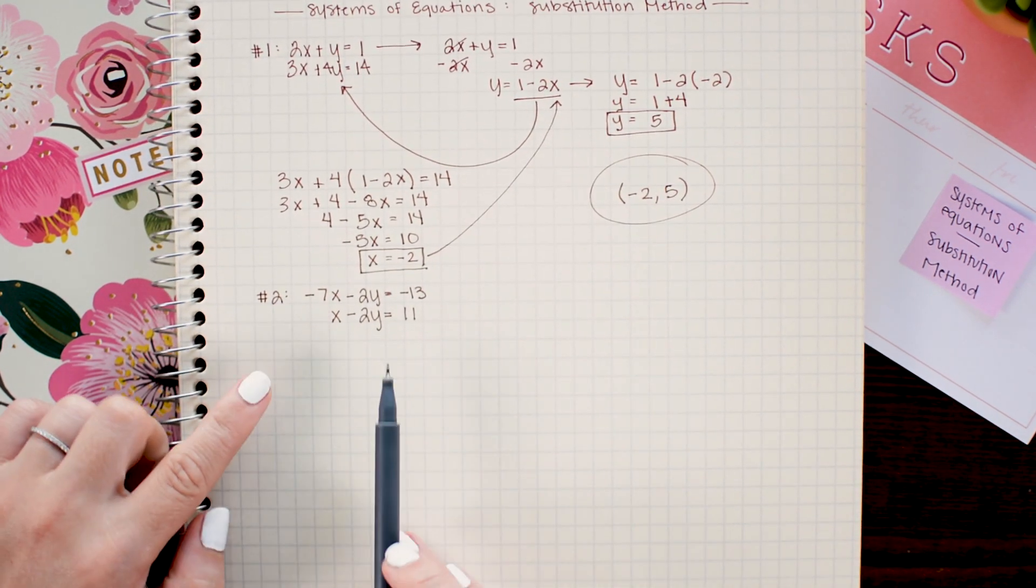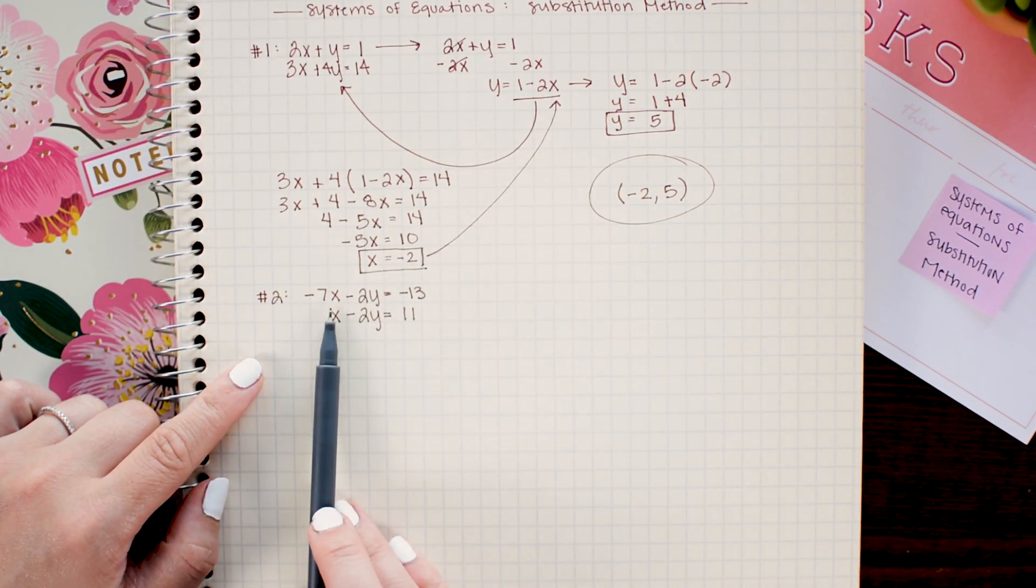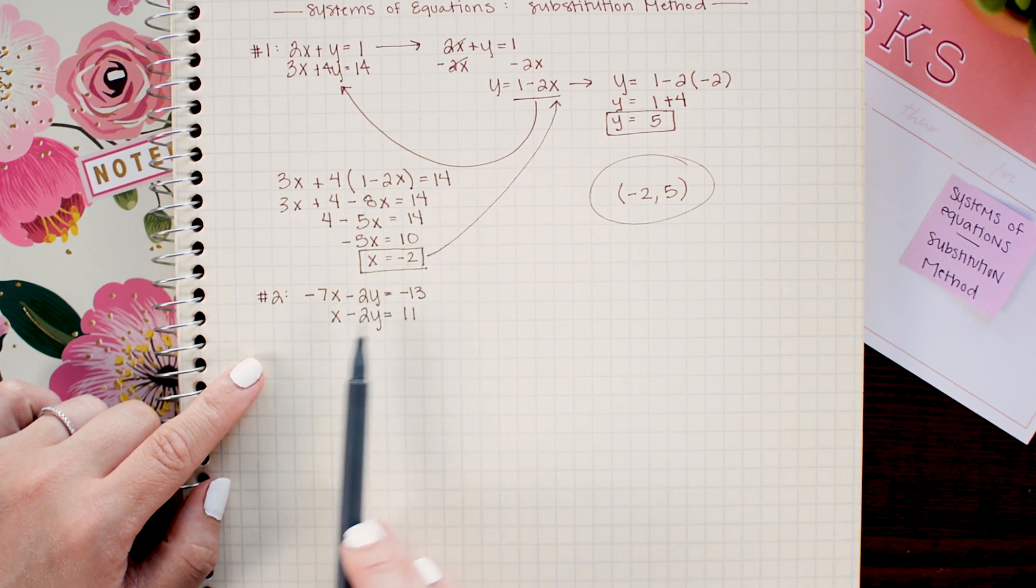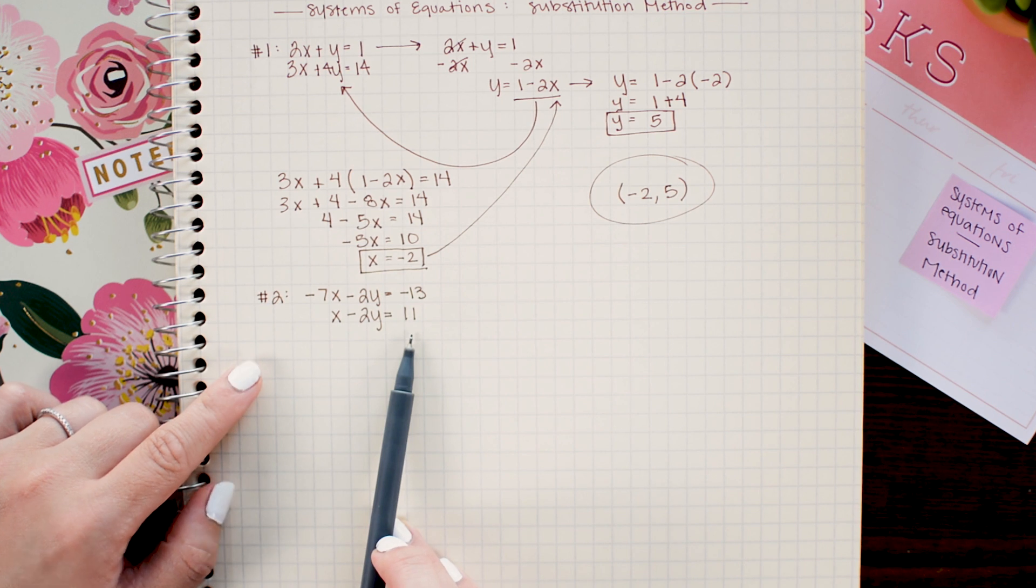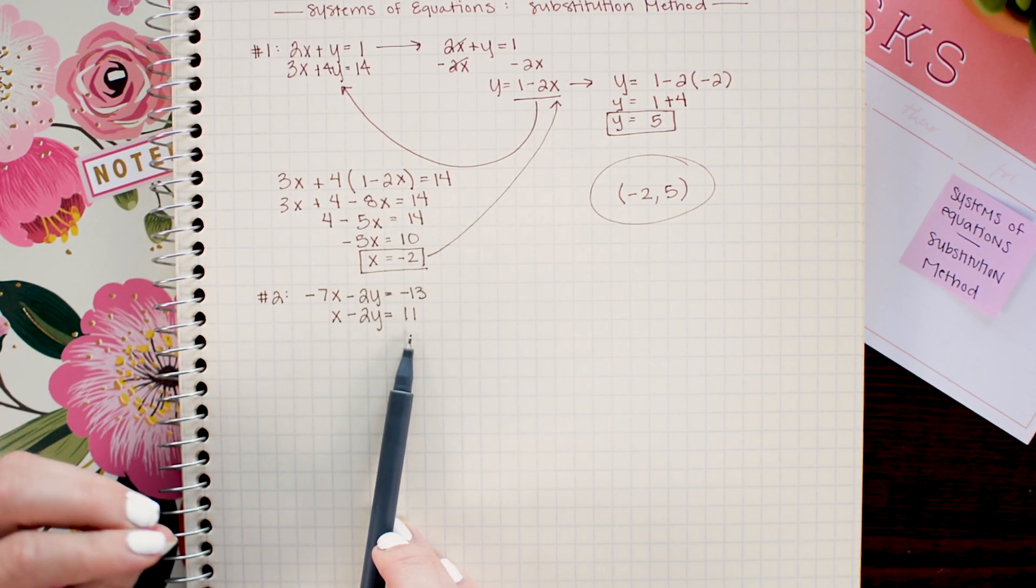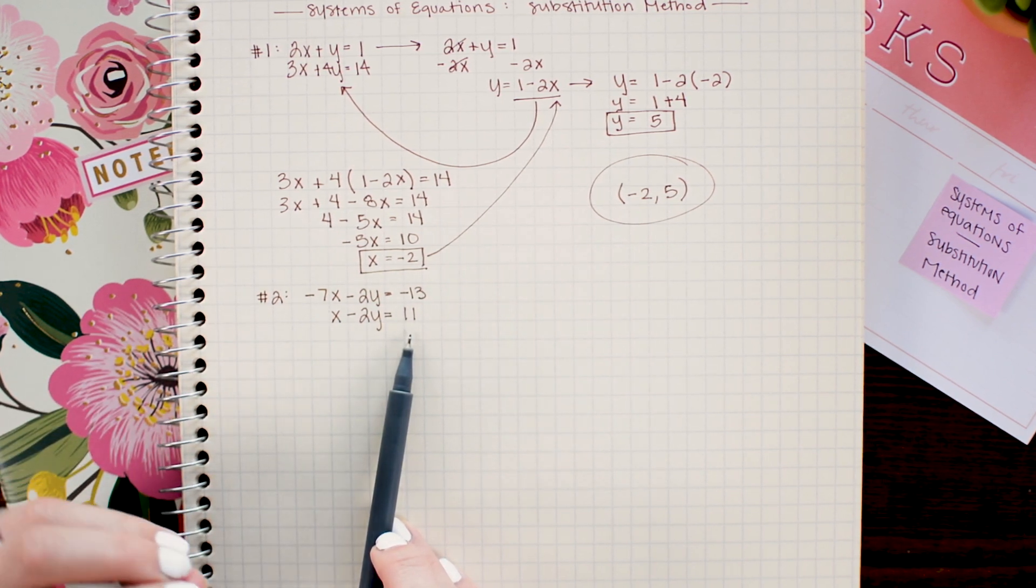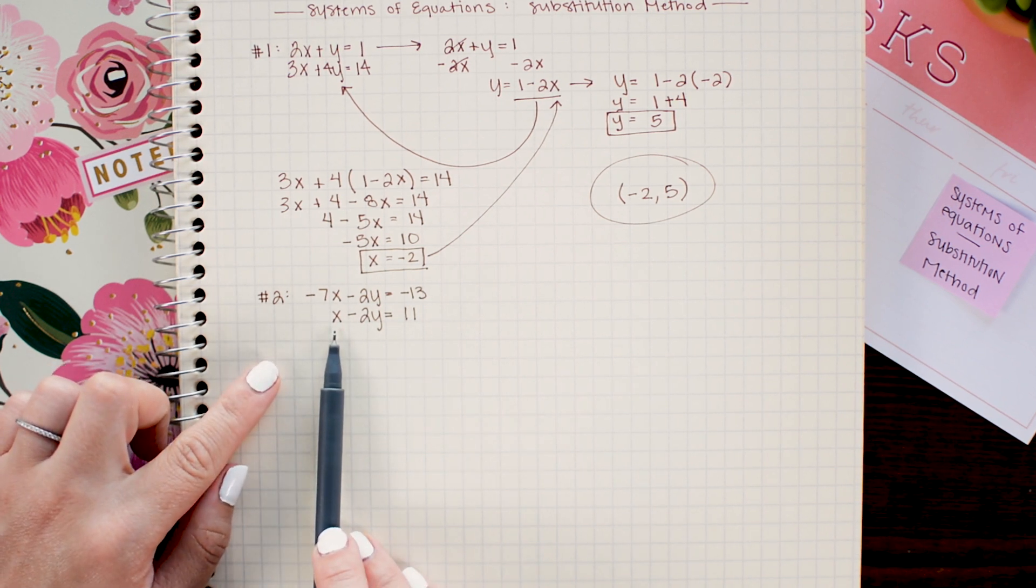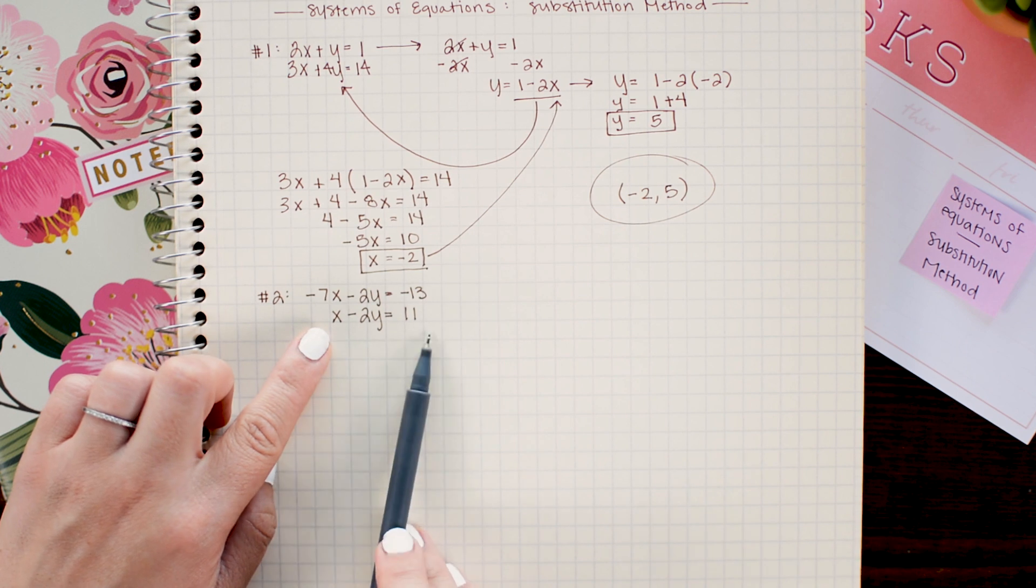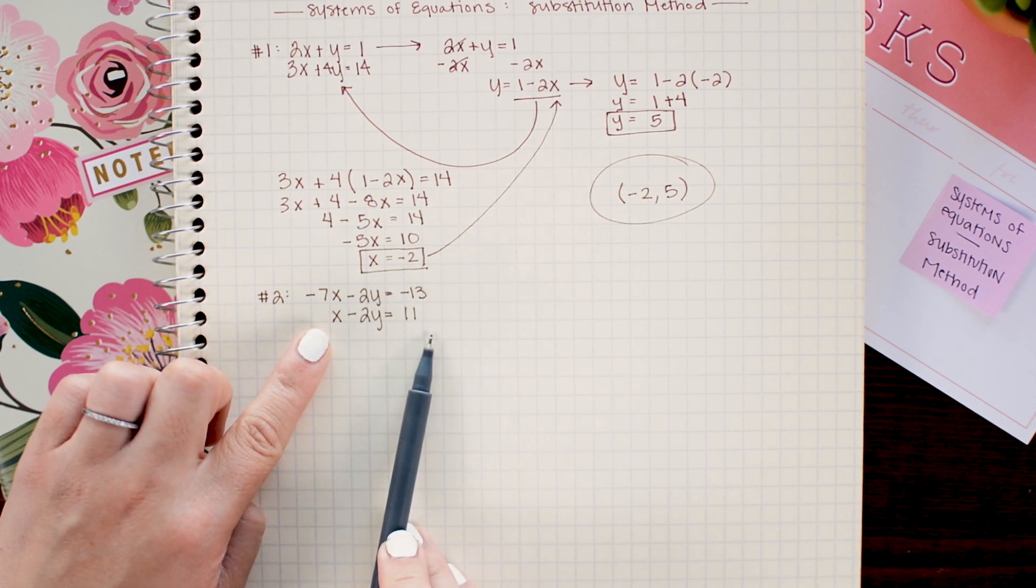In this second problem I have negative 7x minus 2y equals negative 13 and x minus 2y equals 11. So if I'm going to use the substitution method the easiest variable to isolate in this problem will be this x in the second equation. So my first step is to take this second equation and rearrange it so x is alone.